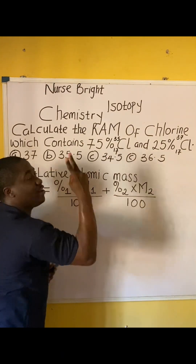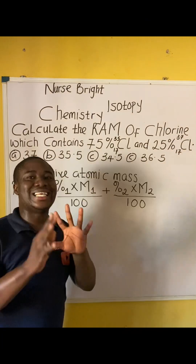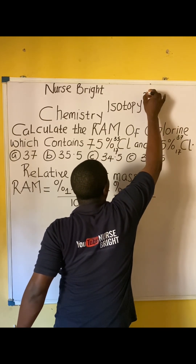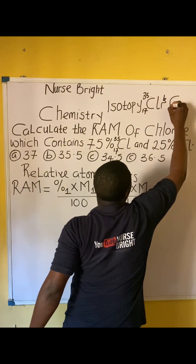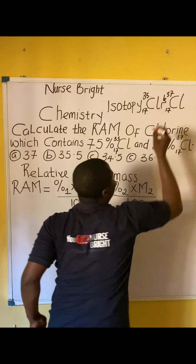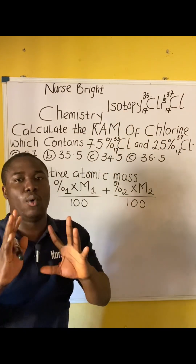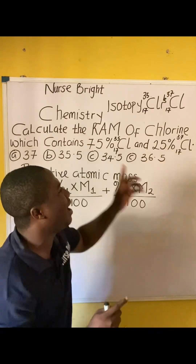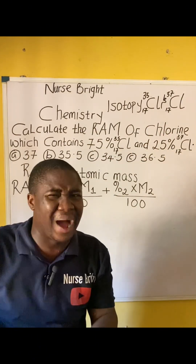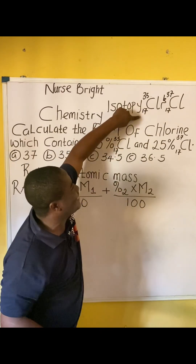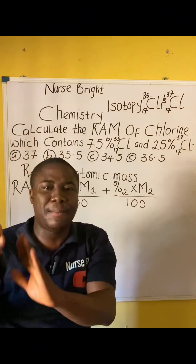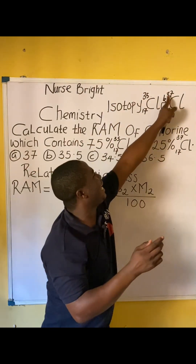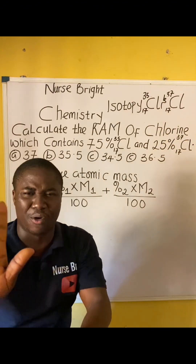We were given two isotopes of chlorine: the first isotope is Cl-35-17 and the second isotope is Cl-37-17. For any element, the value written up is called the mass number and the value written down is called the atomic number. So 35 is the mass number of chlorine-35, and 37 is the mass number of chlorine-37.